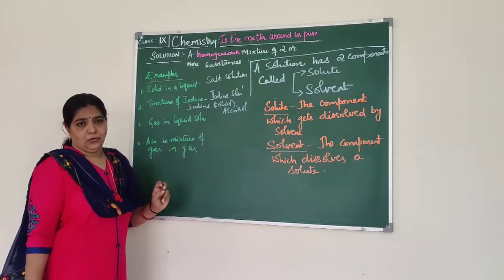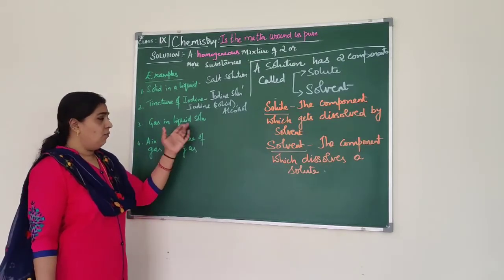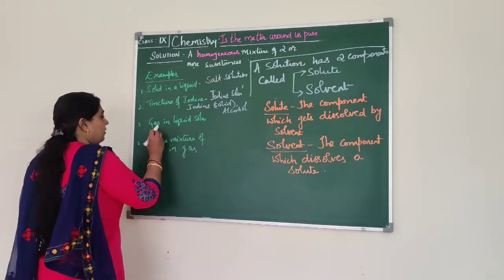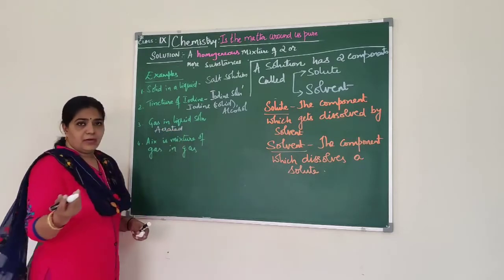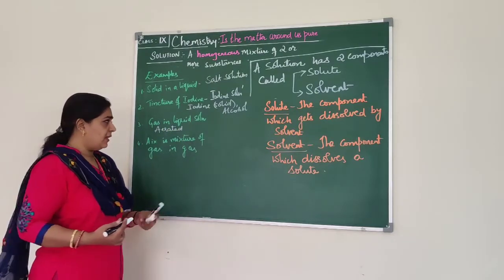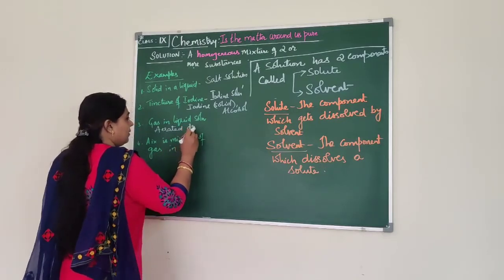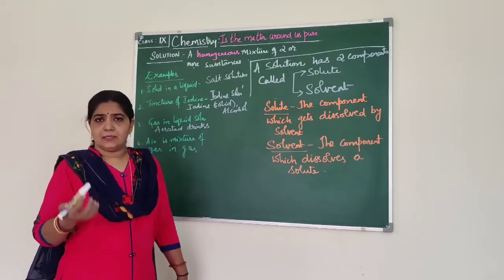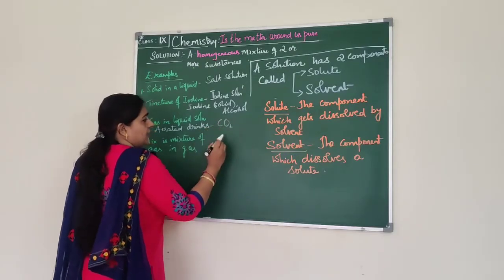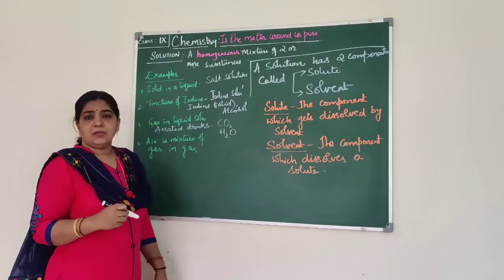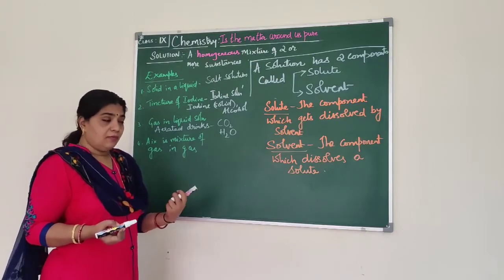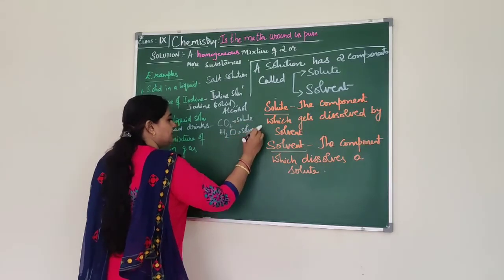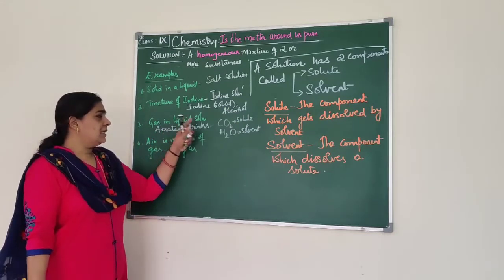Gas in liquid solution: an example of gas dissolved in liquid. Whenever you drink aerated drinks like Pepsi or Coca-Cola — those fizzy drinks — when you open them you can see a gas coming out. That gas is carbon dioxide. So carbon dioxide dissolved in water is the example. Carbon dioxide is the solute and water is the solvent. It is a gas in liquid solution.